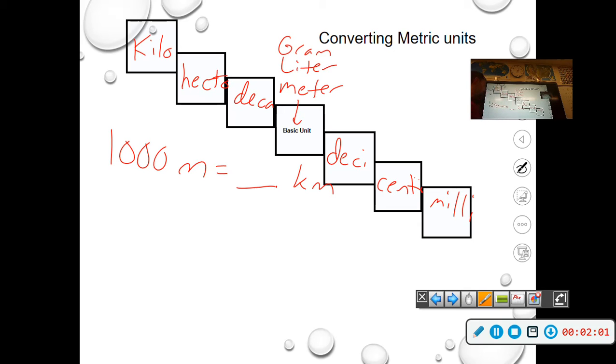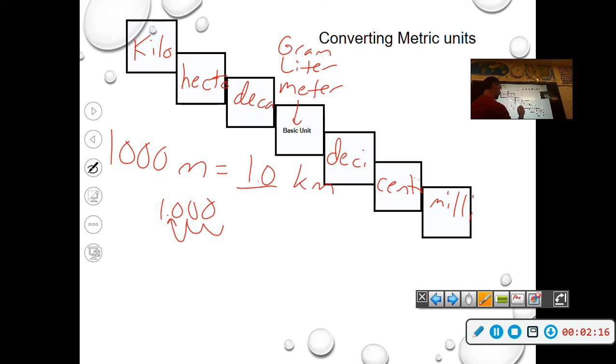And we move to the left, we're going to do the same thing with the decimal point. So if we have a thousand, the decimal point is here, so we're just going to slide it one, two, three places to the left, and the answer is 1.0 kilometers. So 1,000 meters is equal to 1 kilometer.